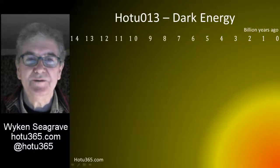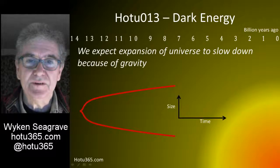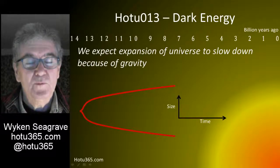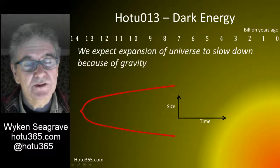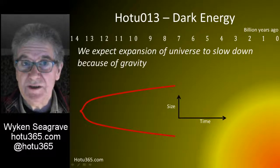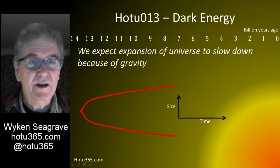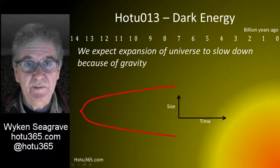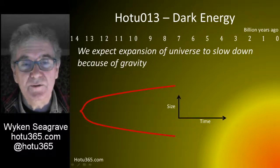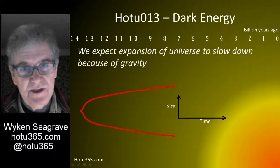Today we're going to talk about dark energy. We expect that the rate of expansion of the universe would slow down because of gravity. We know that gravity is a force of attraction between all particles, and we also know that there is dark matter which increases the gravity. So there are lots of forces of attraction pulling everything closer together, which makes the initial expansion from inflation and from the Big Bang slow down, and this is what we observe.